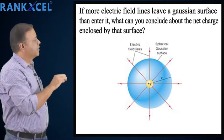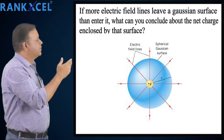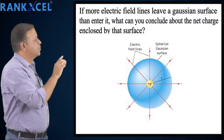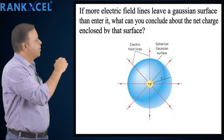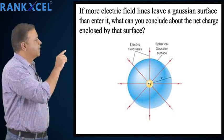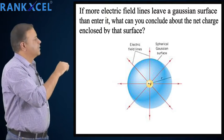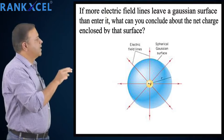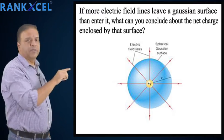So if you make a Gaussian surface around a charge distribution and find that more lines exit the surface than entering it, this means that there is a net positive charge.